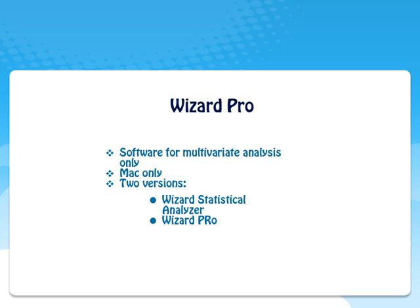There are two versions. One is called the Wizard Statistical Analyzer — this is the basic form. The second version is called WizardPro. The difference is that WizardPro allows you to import data from big statistical software like SAP, StarTower, and SPSS, whereas the Wizard Statistical Analyzer lets you import data from Excel.